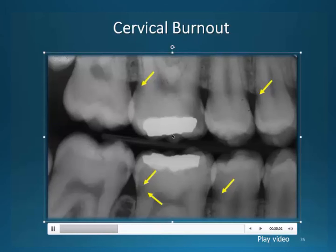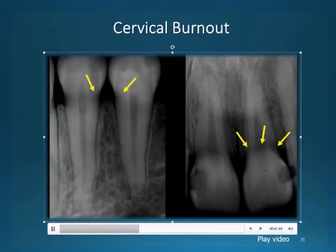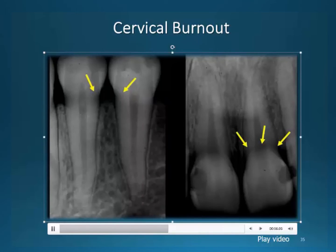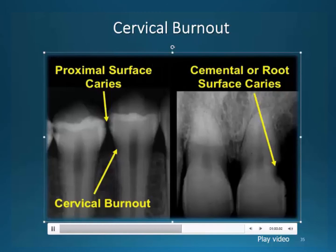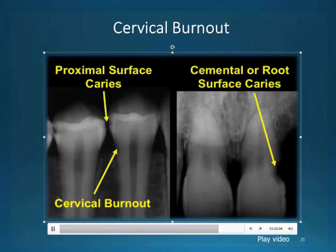Cervical burnout may have the appearance of a fan-shaped, diffuse, ill-defined radiolucency associated with posterior teeth, or it may appear as diffuse ill-defined banding in the cervical region of anterior teeth. You should expect to see cervical burnout associated with the cervical region of almost all teeth that have a good level of bone support. It should not be confused with a proximal carious lesion beginning just apical to the contact point, nor with root surface caries that appears cupped out, more darkly radiolucent, and usually requires bone loss prior to initiation.